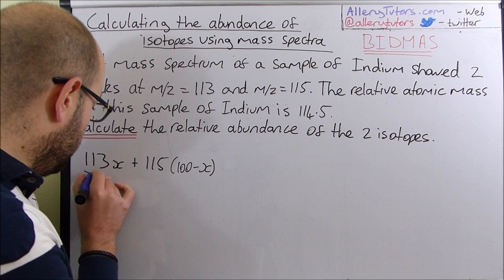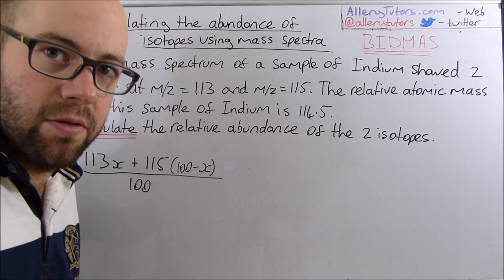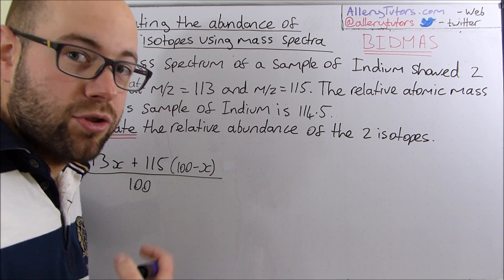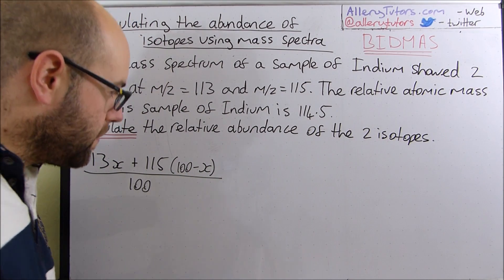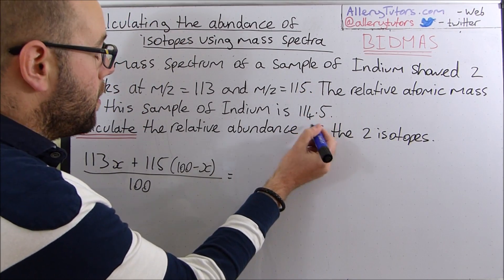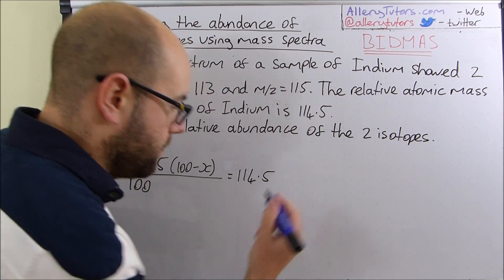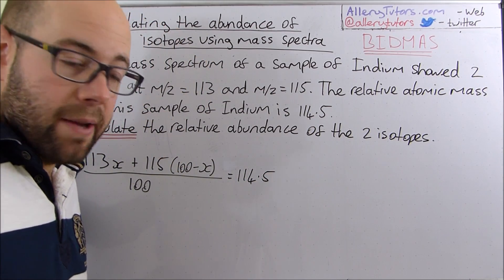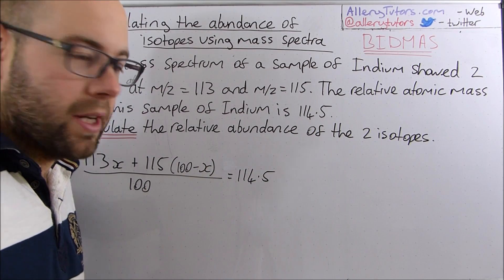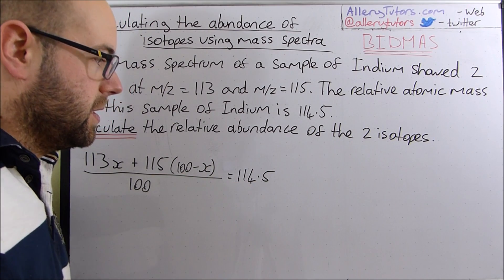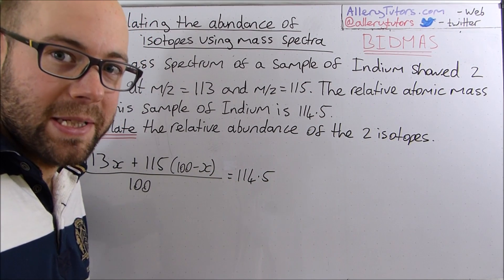Normally what we do is divide them by 100 because we're going to say this is 100%. For these types of examples just use it as a percentage, it makes it so much easier. So let's divide by 100 and that equals our relative atomic mass of 114.5. This might look familiar to you when you're working out the relative atomic mass of an element from its isotopes.